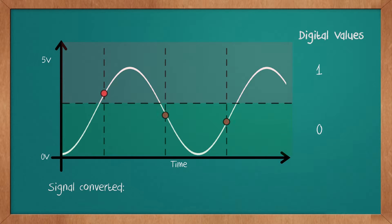Let's convert it. The first sample falls into the upper region, so it's a 1. The second sample falls into the bottom region, so it's a 0. Finally, the value of the last sample falls into the bottom region, which corresponds to the digital value 0.